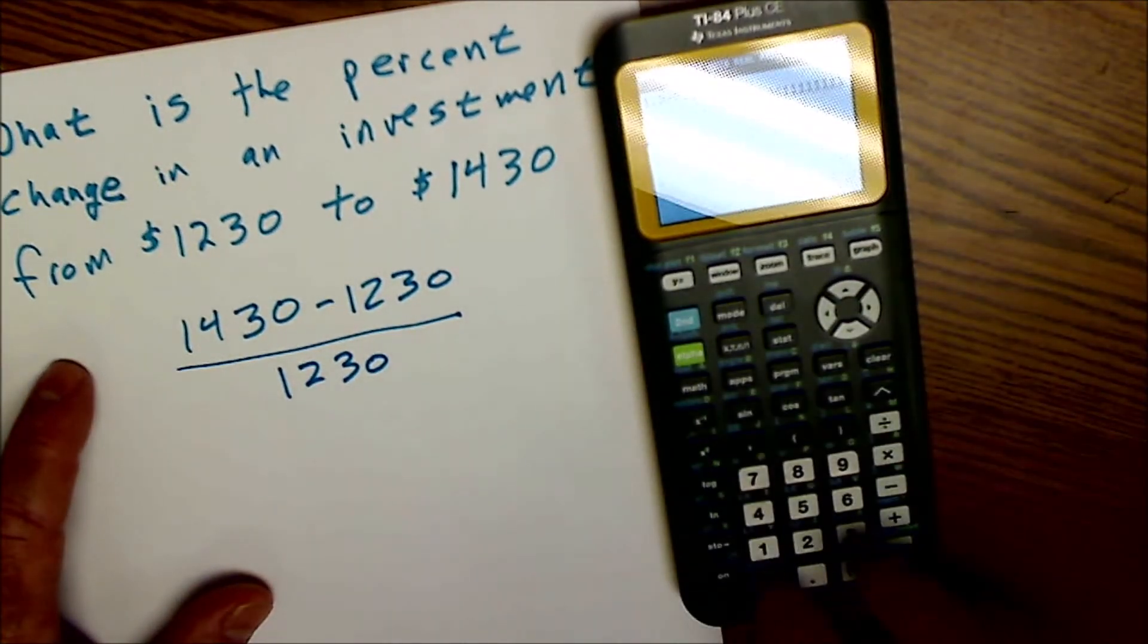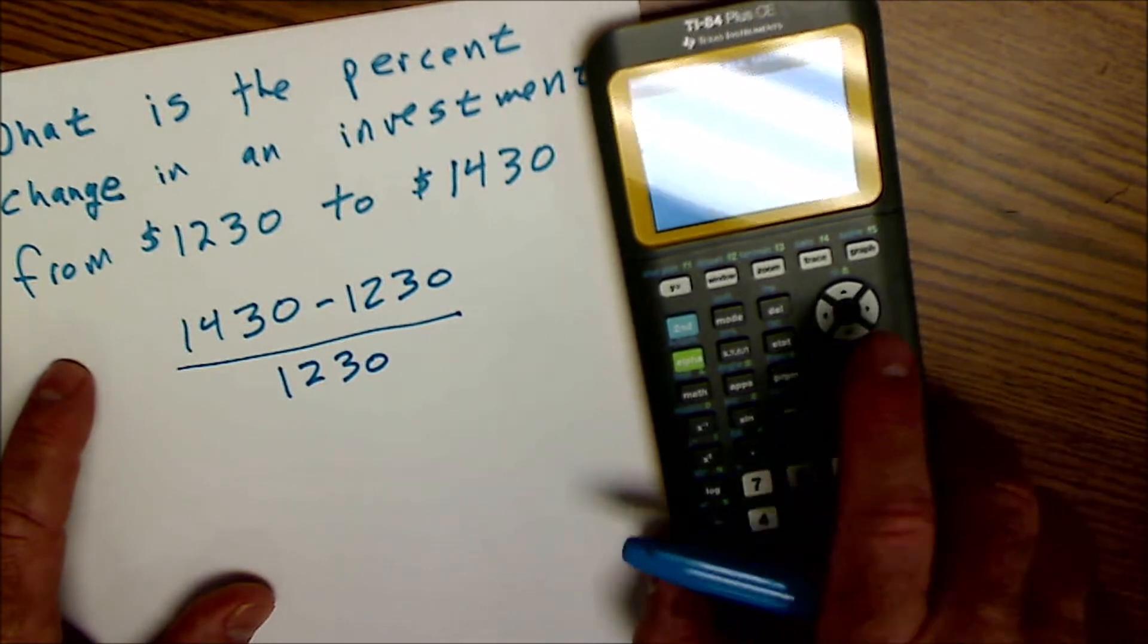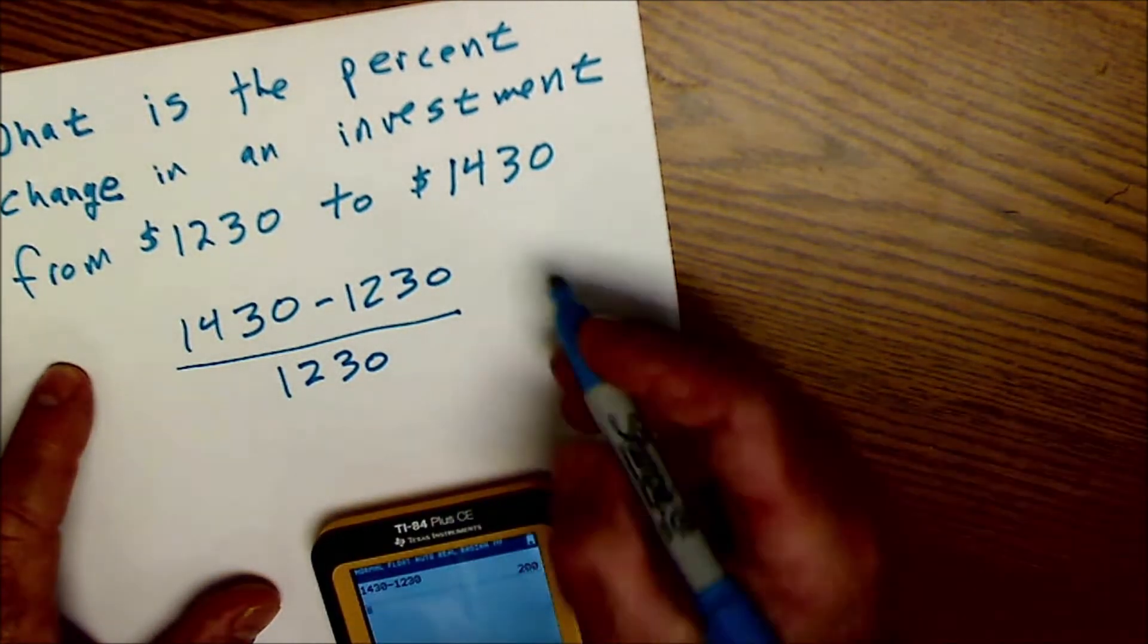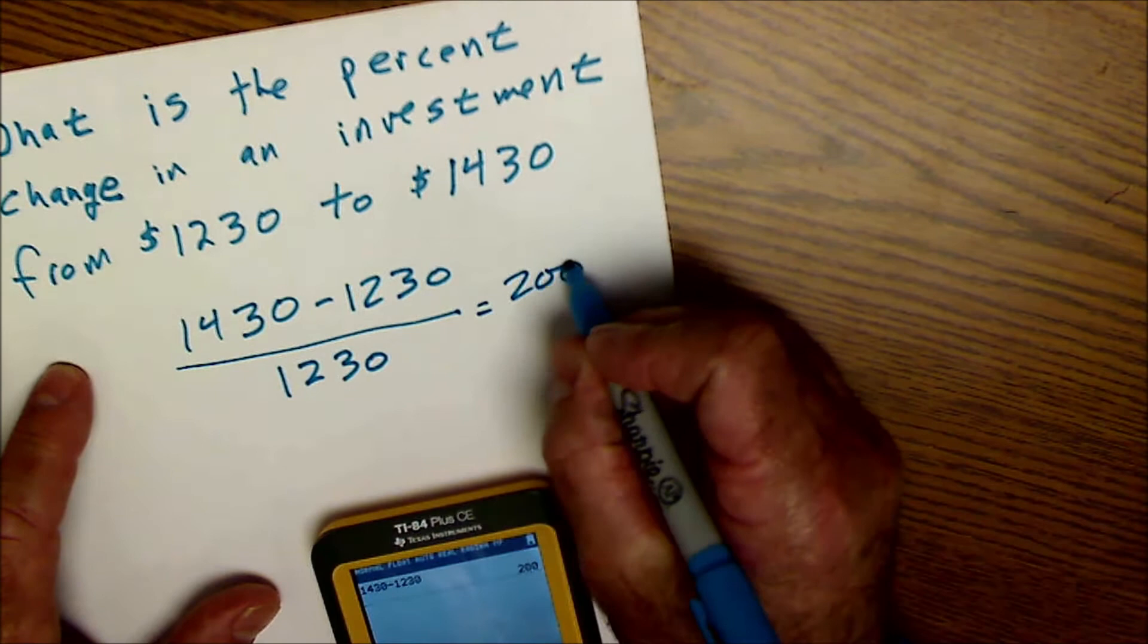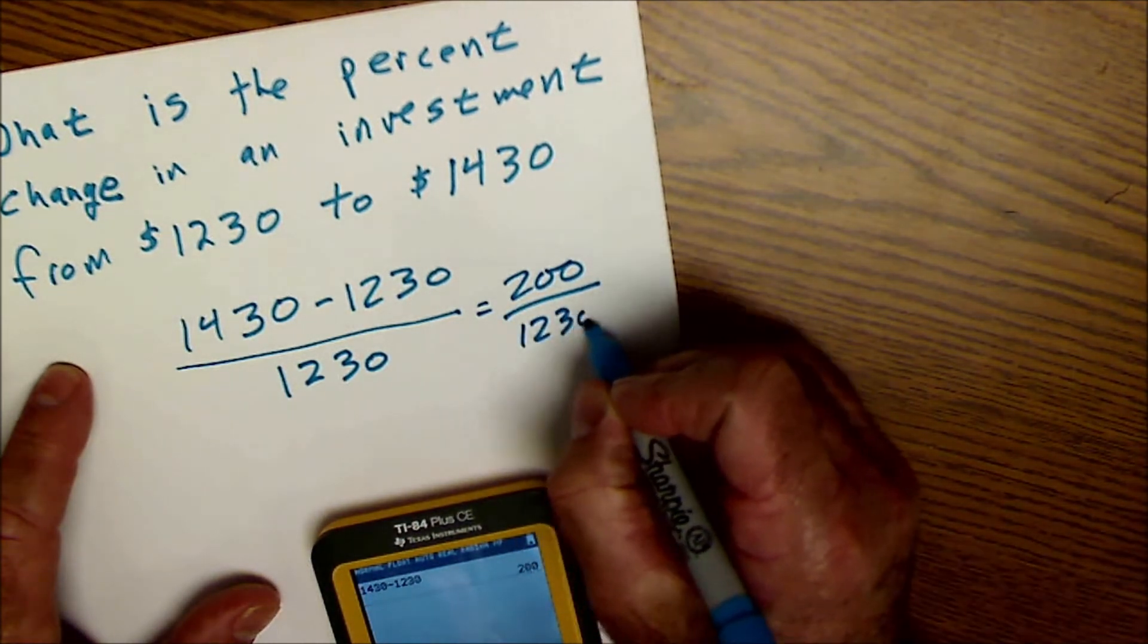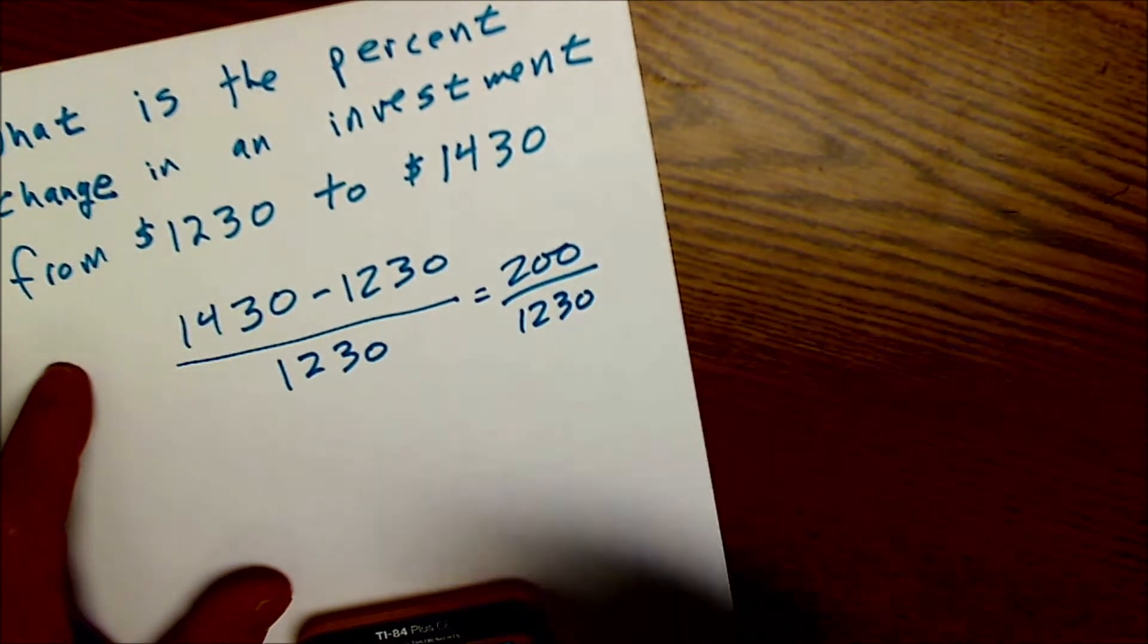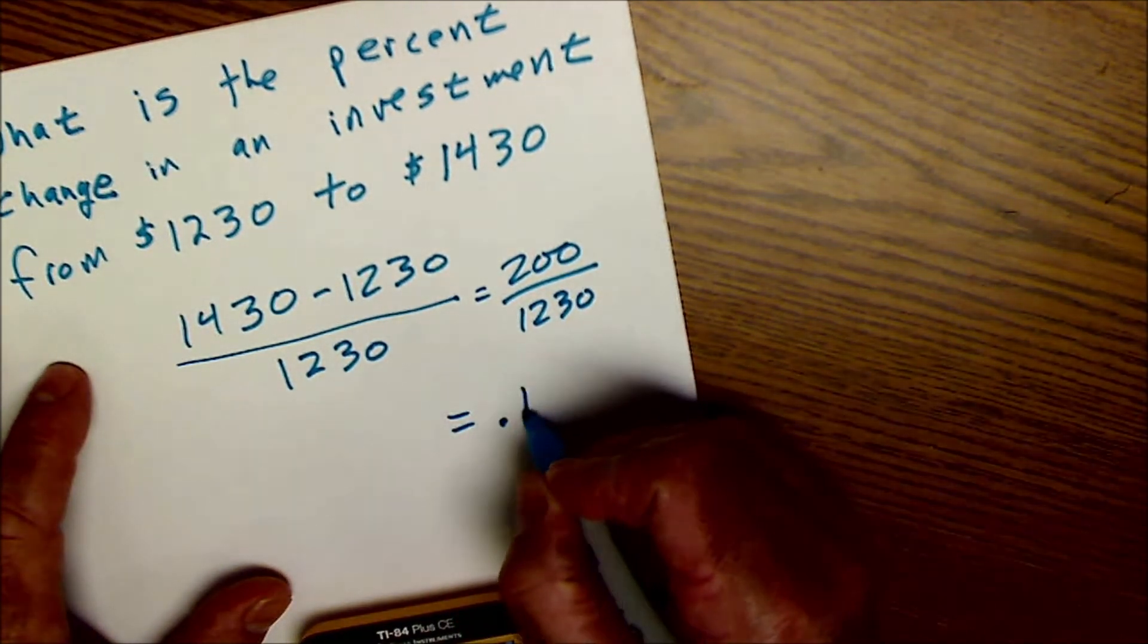Then again, I'll do this on my calculator. So I'm going to do $1,430 minus $1,230, that's $200, divided by $1,230. So $200 divided by $1,230 is going to give me 0.16.